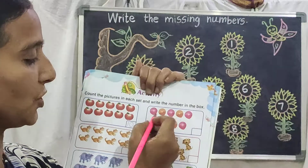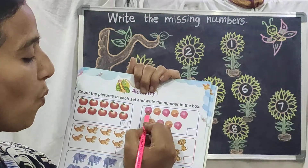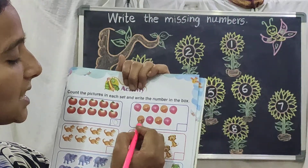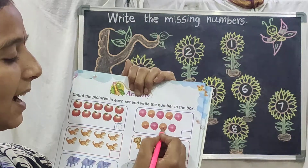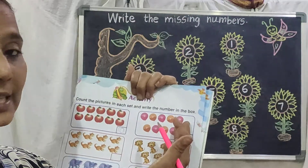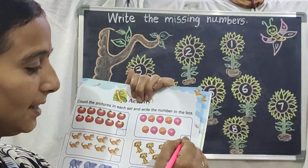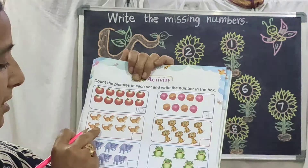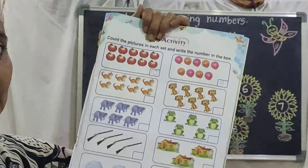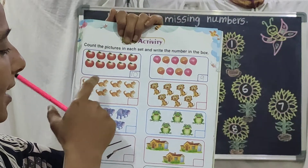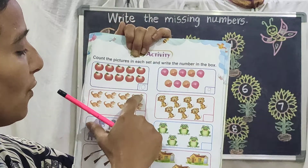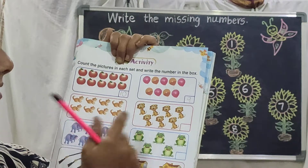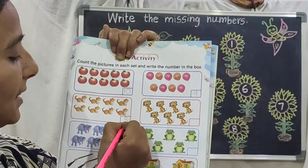Go to next picture. Let's count the balloons, children: 1, 2, 3, 4, 5, 6, 7, 8, 9. How many balloons we are seeing here? 9 balloons. So write the number 9 in the box. Go to next picture — see here, how many cats we are seeing here? Let's count: 1, 2, 3, 4, 5, 6, 7, 8. So write the number 8 in the box.